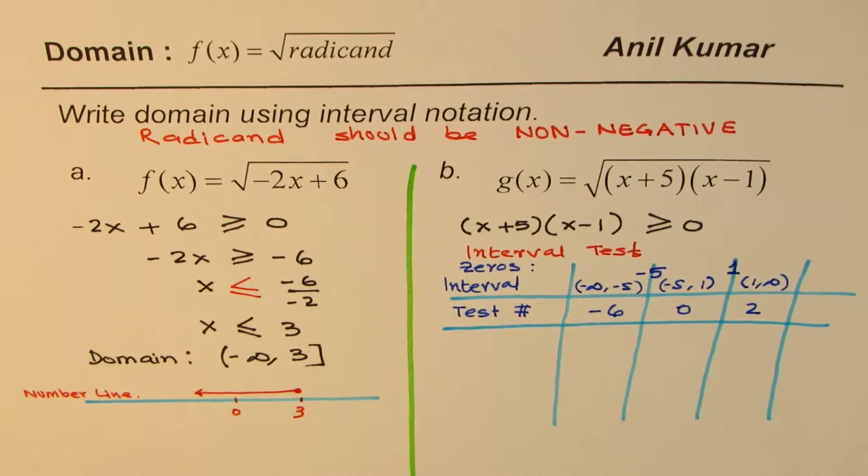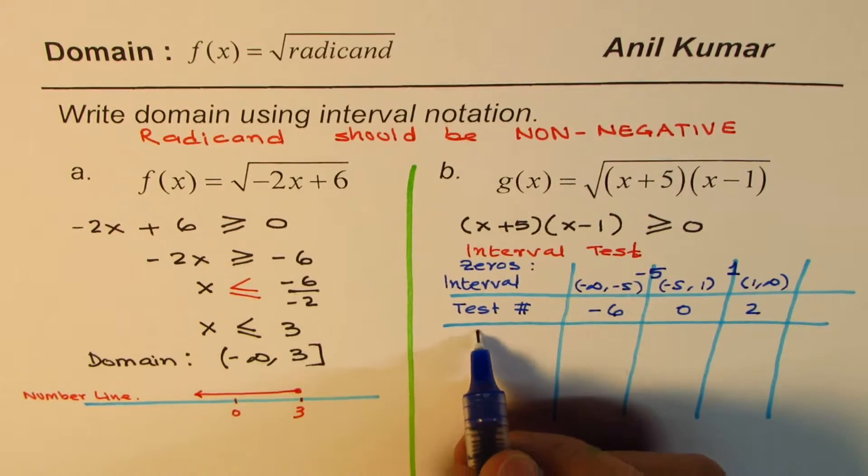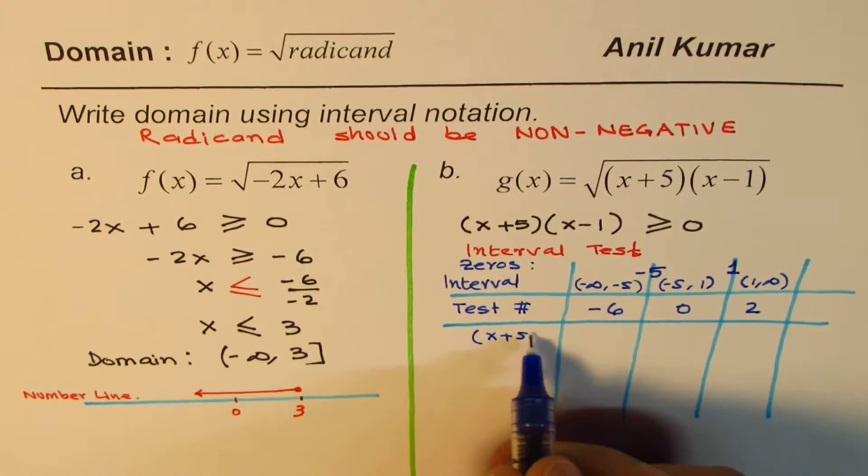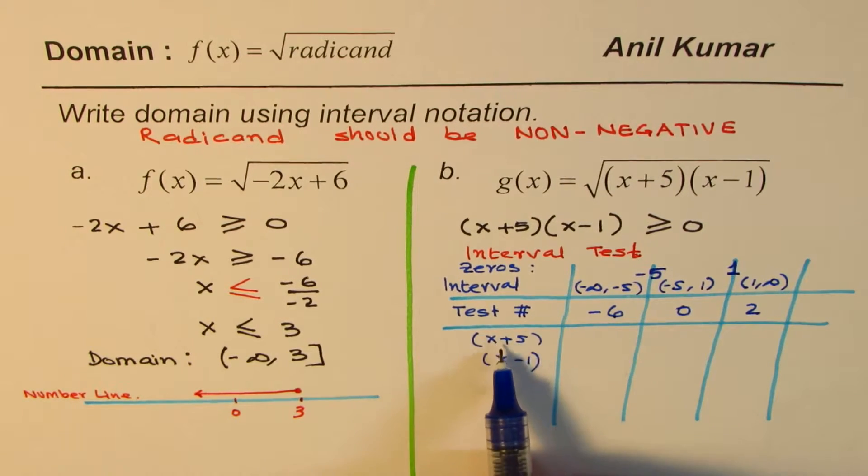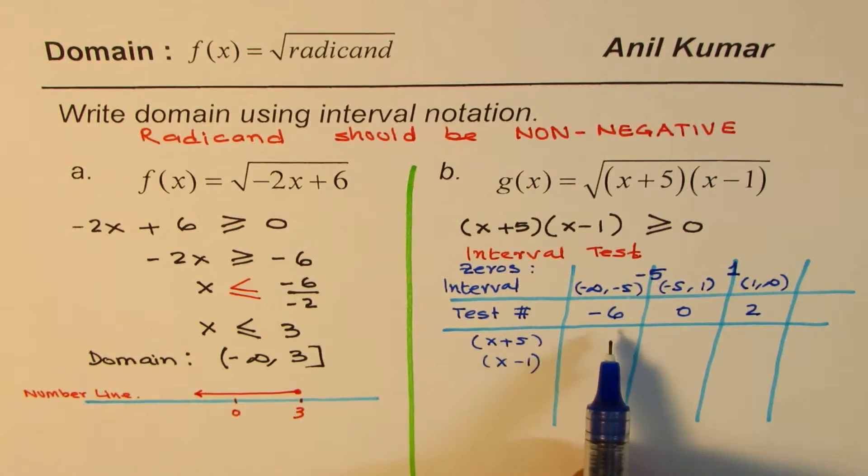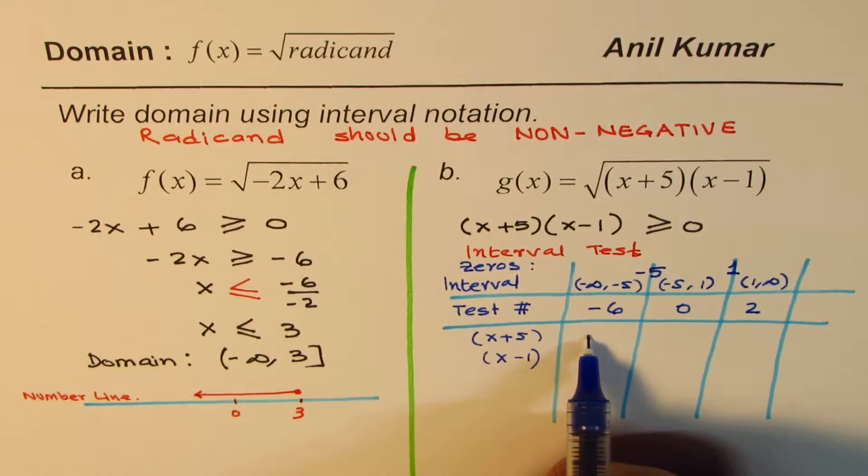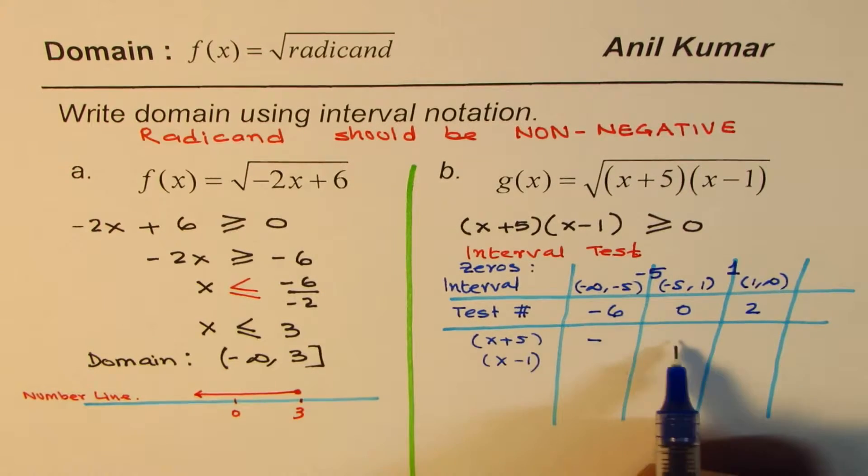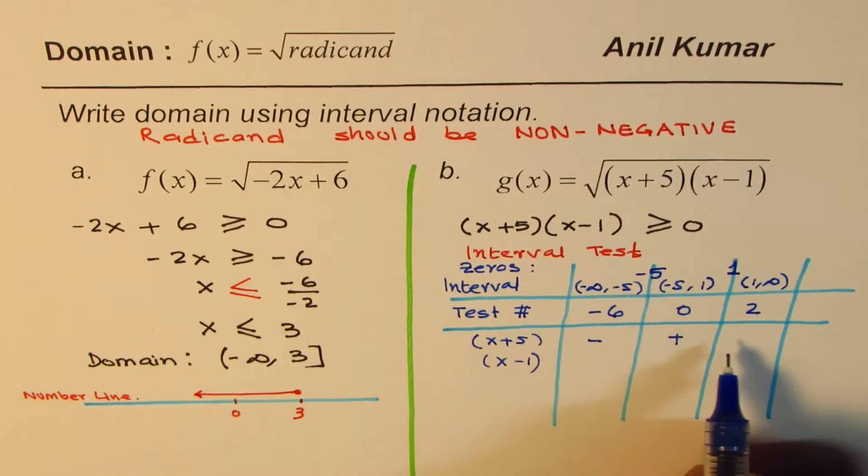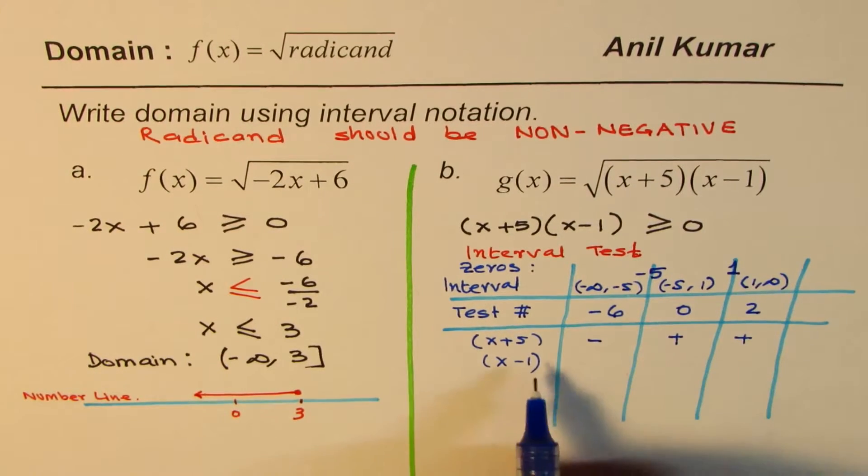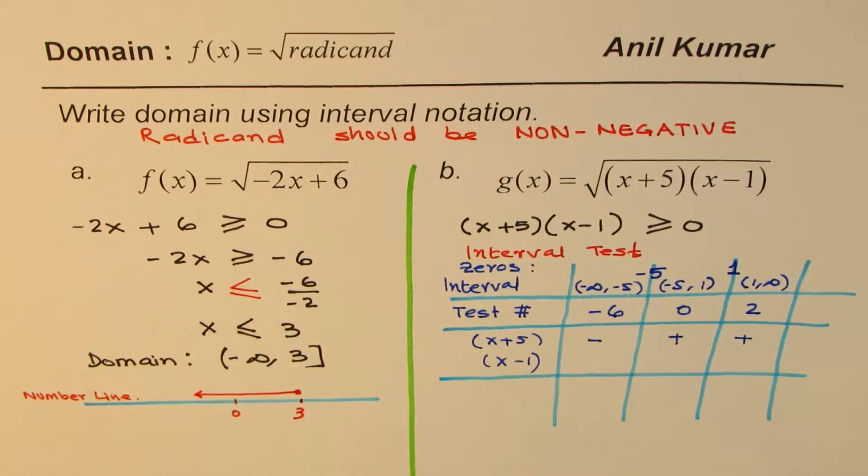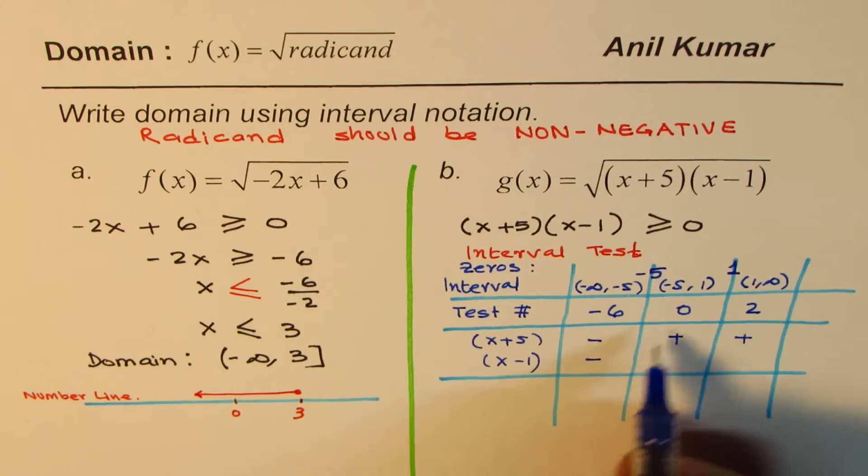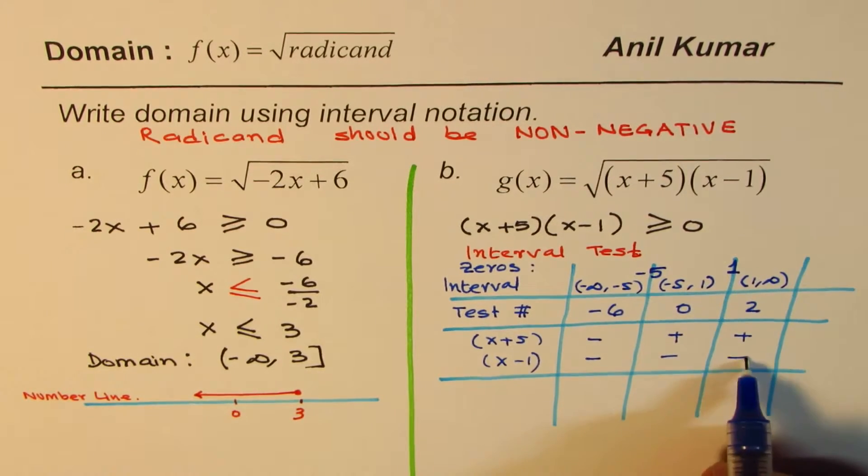The factors we are talking about are x + 5 and x - 1. If I substitute x as -6, I get negative for x + 5. If I substitute 0, we get positive. If I substitute 2, positive. In x - 1, if I substitute -6, I get -7 so negative. Zero gives me negative, and 2 gives me a positive number.